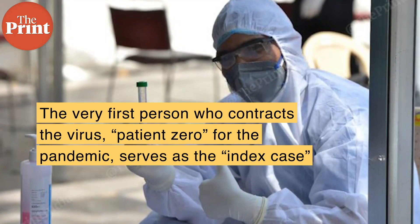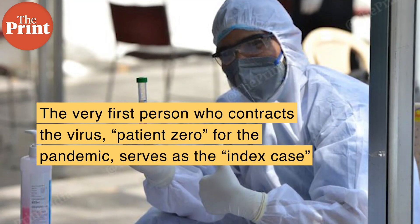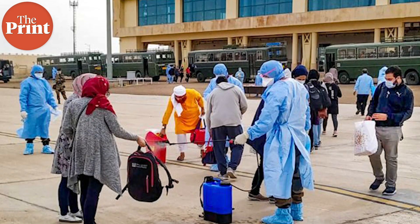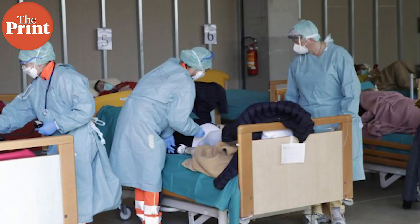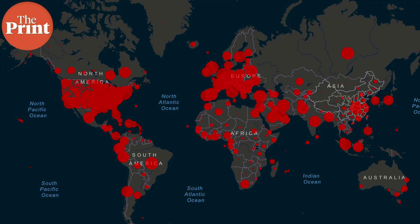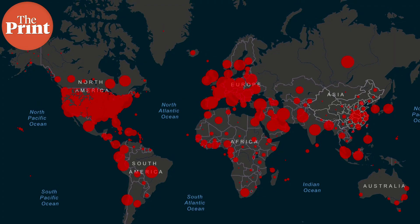The very first person who contracted the virus is patient 0 for the pandemic and serves as the index case, although several countries refer to the index case as the first diagnosed patient. Every individual that patient 0 directly gives the virus to becomes part of the first generation, and every individual they infect in turn becomes part of the second generation, and so on. As the disease spreads exponentially, it becomes increasingly difficult to model given the physical distancing and hygiene measures adopted, which induce a bias in data.